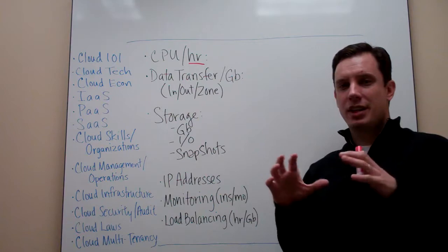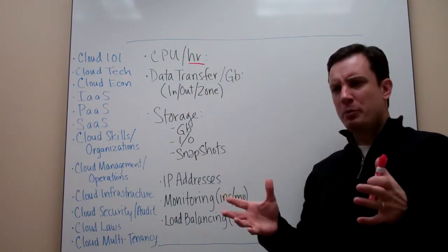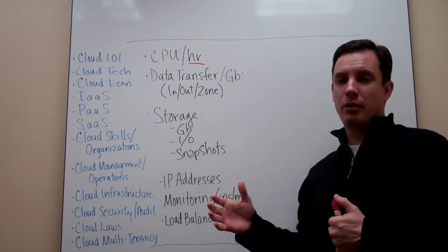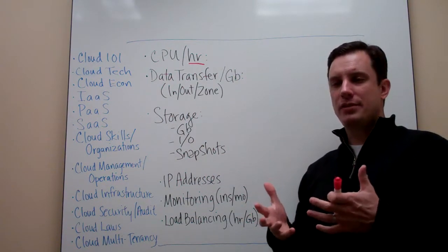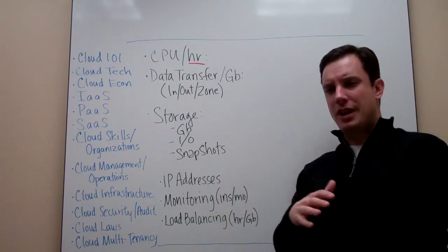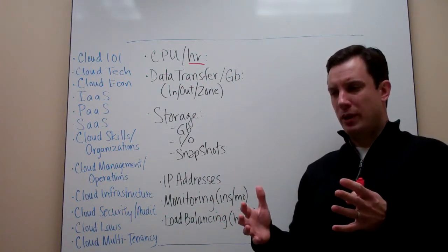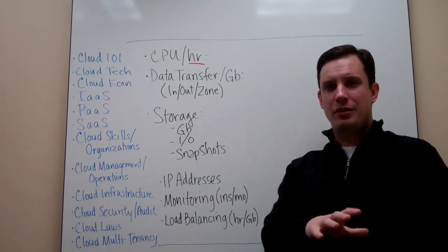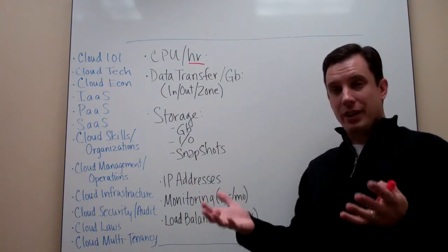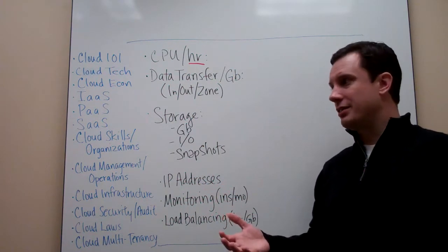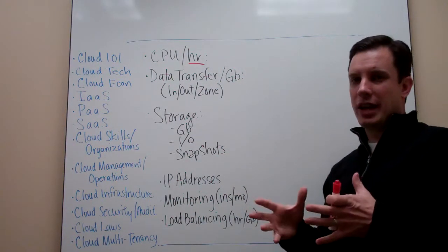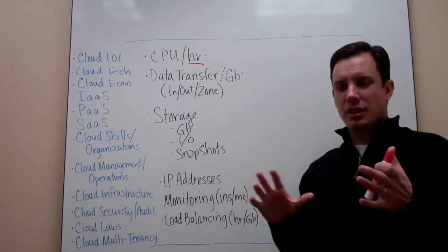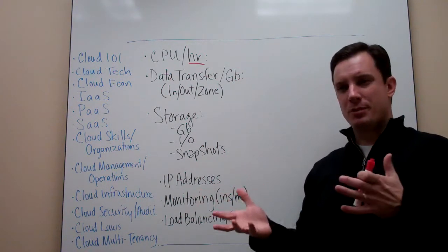So taking all those things into consideration, begin to help you understand what the economics of standing up an application might look like in a public cloud. On the flip side, it also gives you a sense of if people are going to try and do apples to apples comparison. Should I deploy an application internally in a private cloud? Should I deploy it externally in a public cloud? And they simply want to say I need to do an economic comparison between these two things. These are the types of values that you're going to have to look at from a private cloud perspective to be able to match up apples to apples or at least apples to applesauce, so you're making some sort of reasonable comparison.